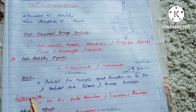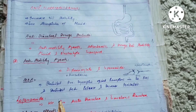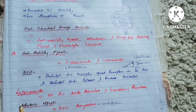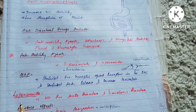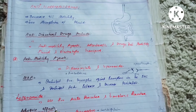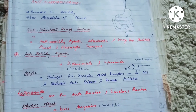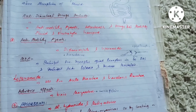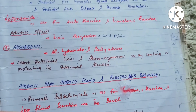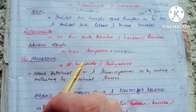Loperamide is the drug of choice for traveler's diarrhea and is also used for acute diarrhea. The adverse effects of the anti-motility agents include toxic megacolon and constipation.